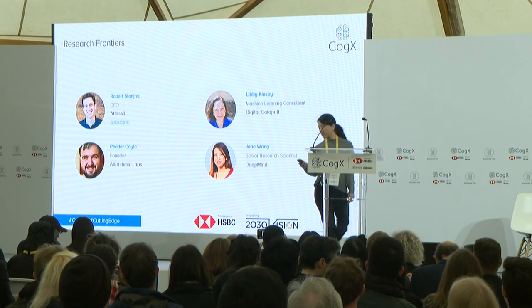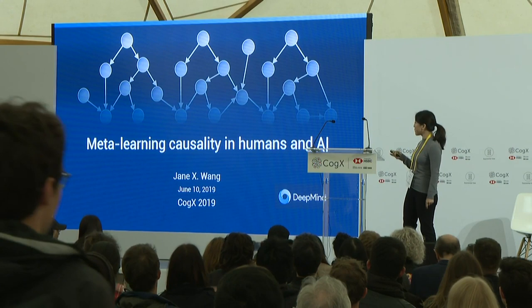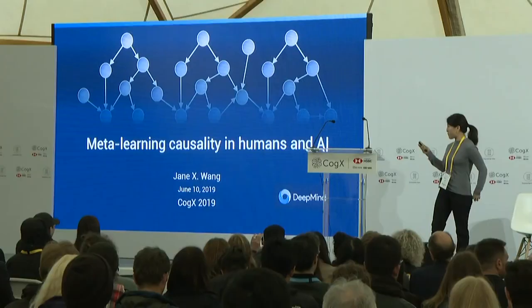Thank you very much to the organizers for inviting me here today. So I'll be talking today about meta-learning causality in humans and AI. Now, artificial intelligence, as we all know, has yielded some pretty impressive advancements in recent years. But one way in which it still lags the way that humans are intelligent is in abstract and causal reasoning. So that's why I'm talking about this today.